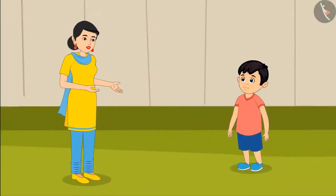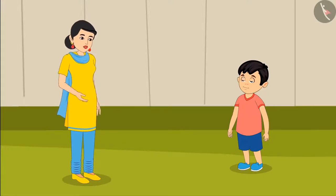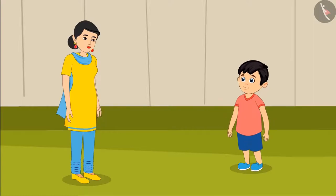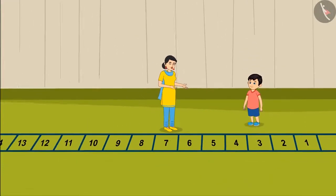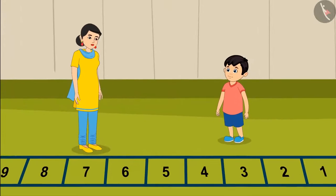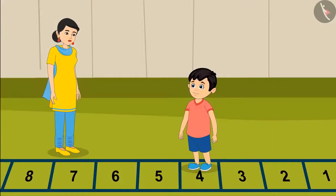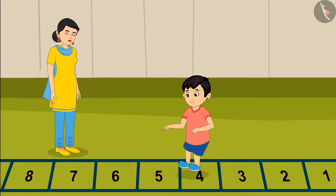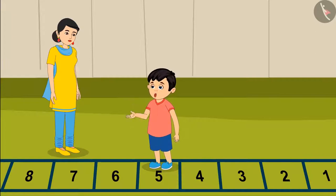Jhotu, just like you were jumping forward and backwards in your class, do you know it can be done with numbers too! Look at these stairs that I have drawn — on these stairs I have written numbers from 1 to 15. Will you go and stand on number 4? Can you jump one step forward from number 4 now? On jumping one step forward from number 4, I reached number 5!